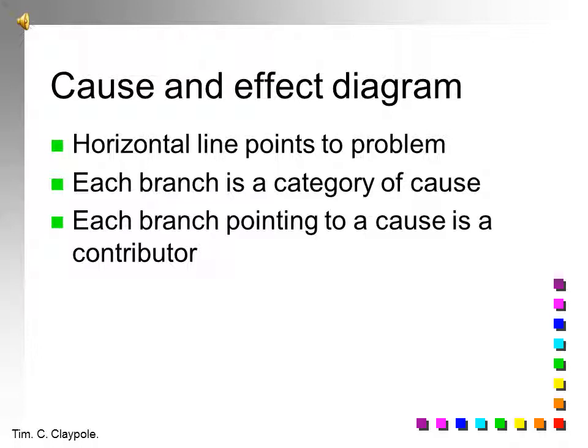Now to summarize. Cause and effect diagram. The problem is put in the right hand box. The horizontal line points to the problem. Each branch is a category of causes. Each branch pointing to the cause is a contributor.